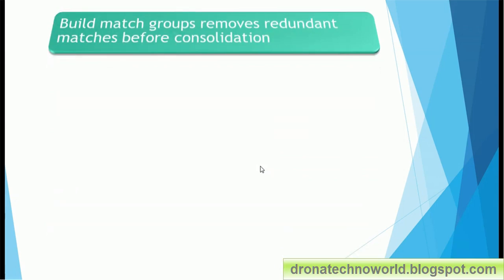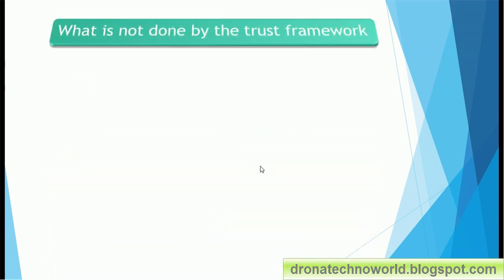Next question: 'Build match groups removes the redundant matches before consolidation' — is it true or false? The correct answer is true. Build match groups removes redundant matches. That's why we have transitive matches: for example, record one matches with two, two matches with three, three matches with four — at the end it will show two, three, and four all matching to one, rather than showing transitive chaining.